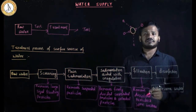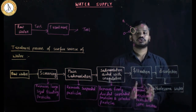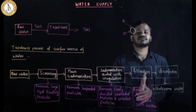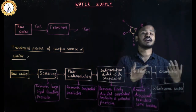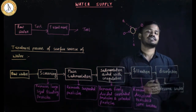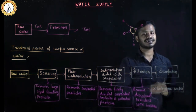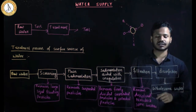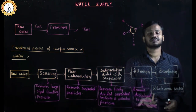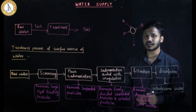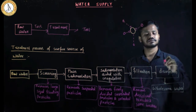Next is disinfection, which means the addition of a chemical to keep water safe from future contamination. After filtration, water must be supplied through pipelines where pathogenic bacteria may be present, so a disinfecting chemical is added to kill those bacteria. Before disinfecting, we need to know how many bacteria are present.